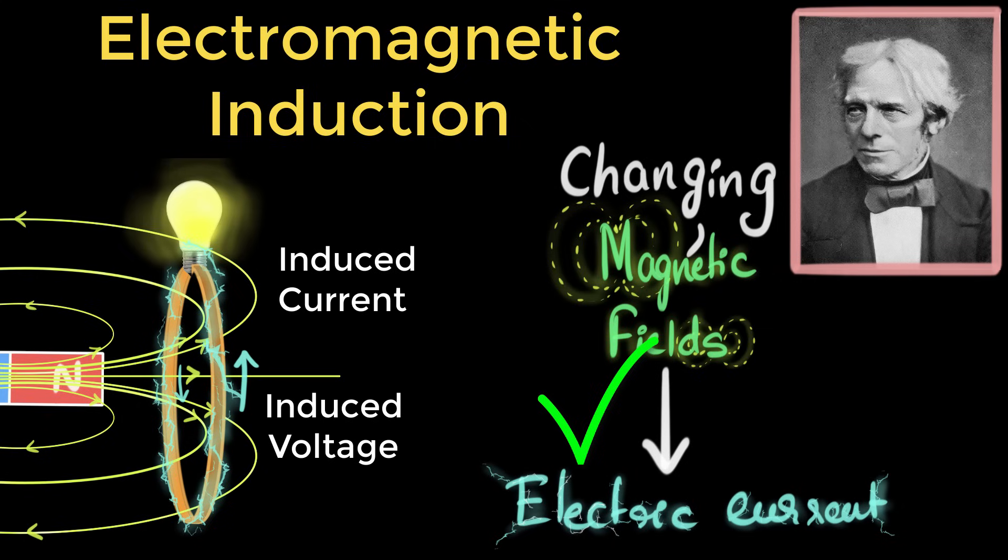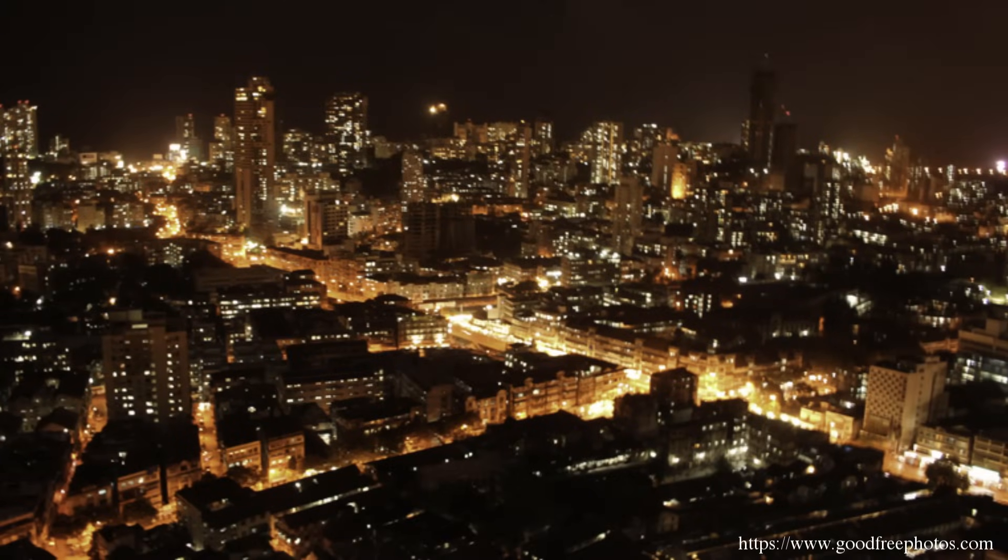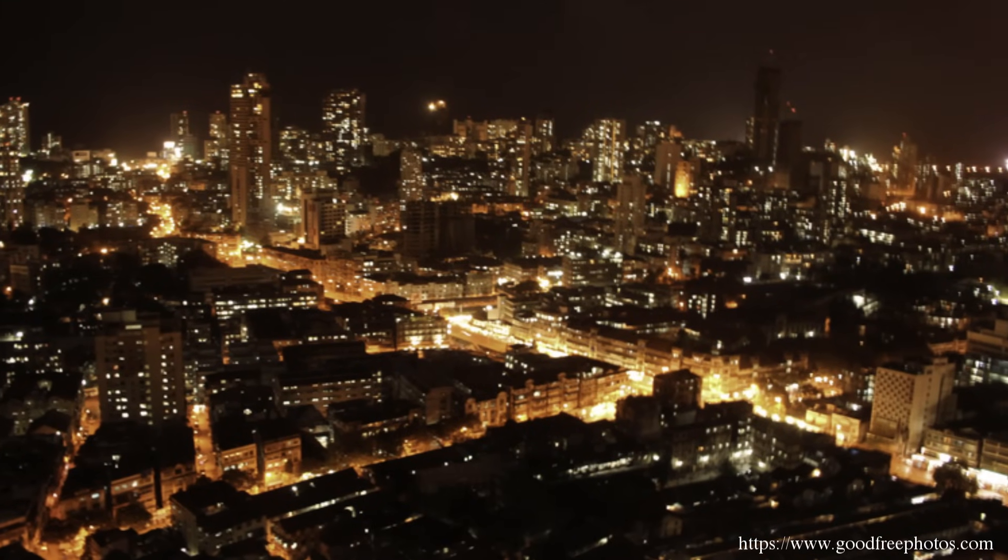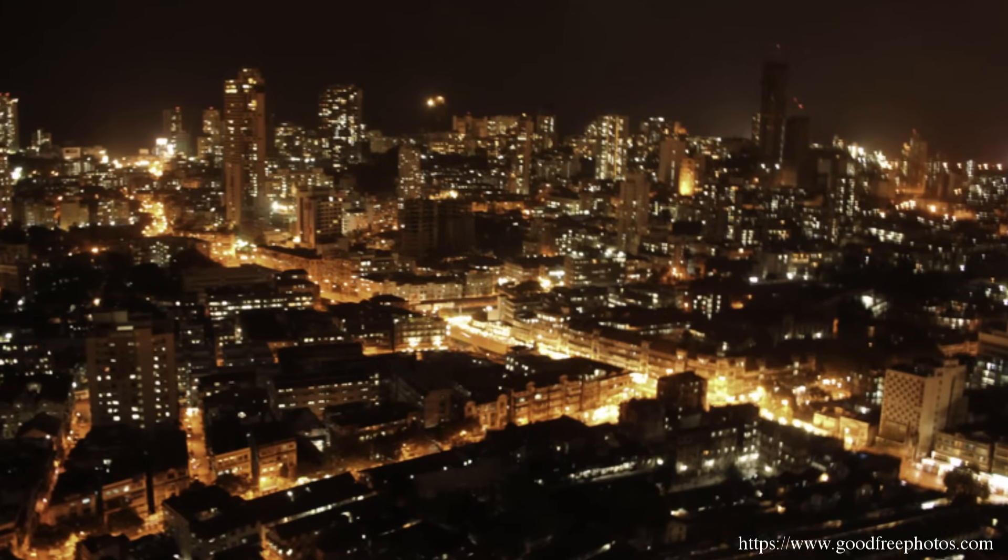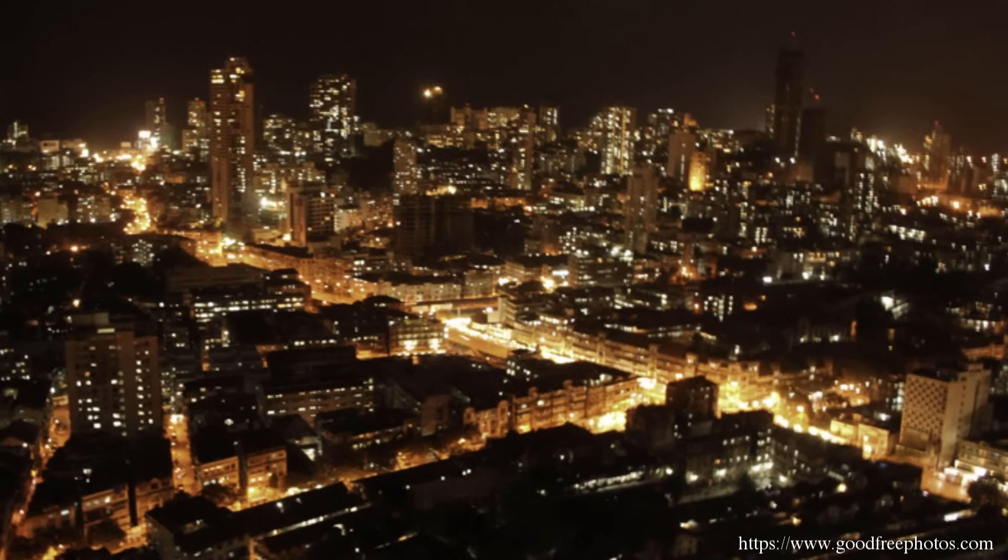So, electromagnetic induction is a phenomenon in which when you change the magnetic field through a coil, it induces a voltage or a current. And when Faraday presented his discovery, one person asked him, so what? Changing magnetic field produces a voltage. What is the big deal? Faraday said, one day, this will power up our entire world. And today, even after more than 200 years, all our generators, all the electricity that you get at your homes is produced by electromagnetic induction.